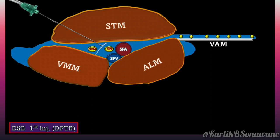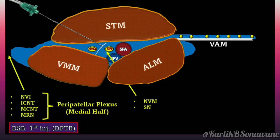Spread within the femoral triangle region directly involves the saphenous nerve and nerve to vastus medialis, along with the medial portion of the peripatellar plexus, due to proximal dispersion. Whereas distal spread above the VAM involves the subsartorial plexus.